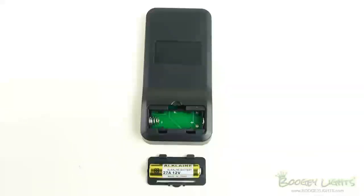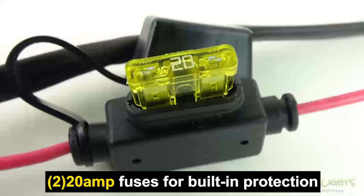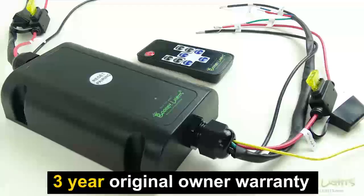The wireless RF M7 Long Range Remote uses one 12-volt A27 alkaline battery, which is included. This controller has built-in protection against short circuit or reverse polarity. We offer a three-year original owner warranty on this controller.